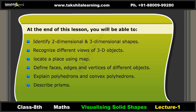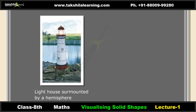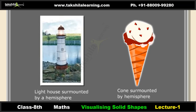You will also be able to explain polyhedron and convex polyhedrons, describe prisms, discuss pyramids, apply Euler's formula, and understand combinations of different shapes. Examples include a lighthouse surmounted by a hemisphere and cones surmounted by a hemisphere — shapes we use in our day-to-day life.